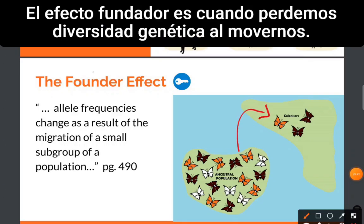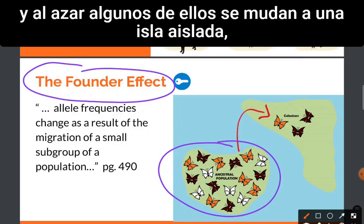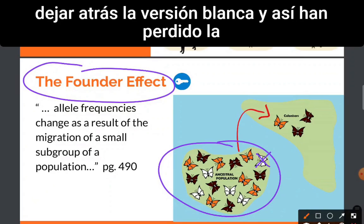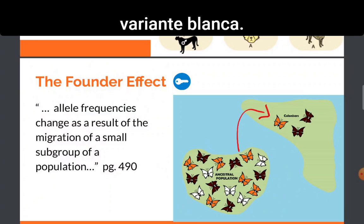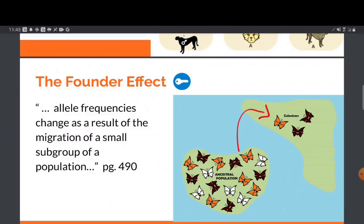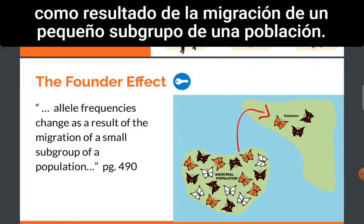Founder effect is when we lose genetic diversity by moving. For example, if you have this population of moths, and randomly some of them move to an isolated island, they might leave behind the white version. And so they have lost the white variant. The founder effect is when allele frequencies change as a result of migration of a small subgroup of a population.